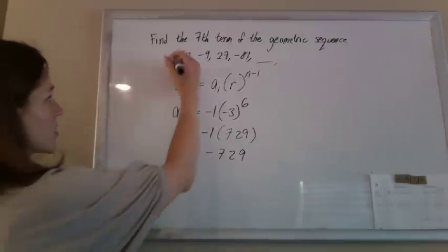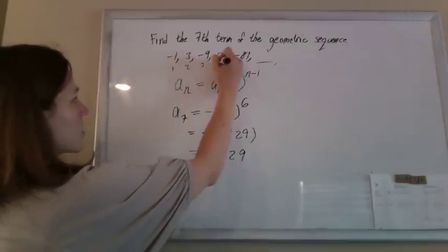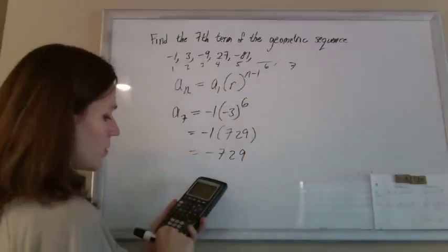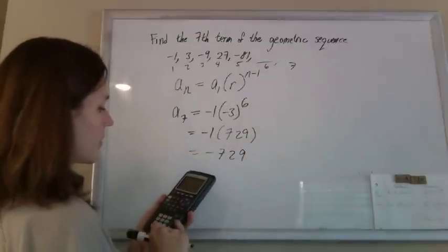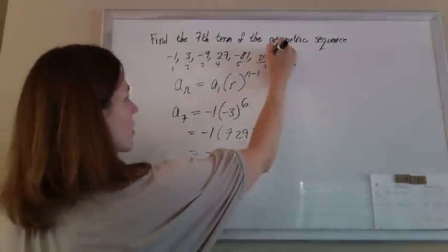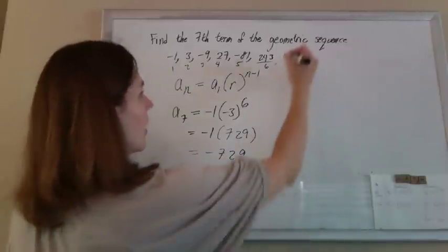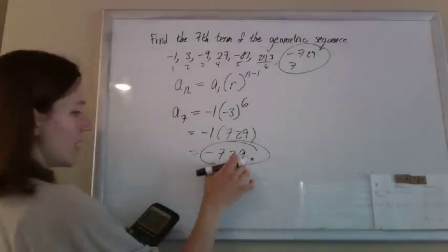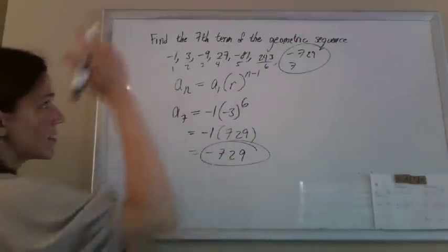Let's just check it just for fun. So this is the first term, second term, third term, fourth term, fifth term, sixth term, seventh term. So if I do negative 81 times negative 3, I get 243. And if I multiply it by another negative 3, I get negative 729. So 729, negative 729 is indeed the 7th term.